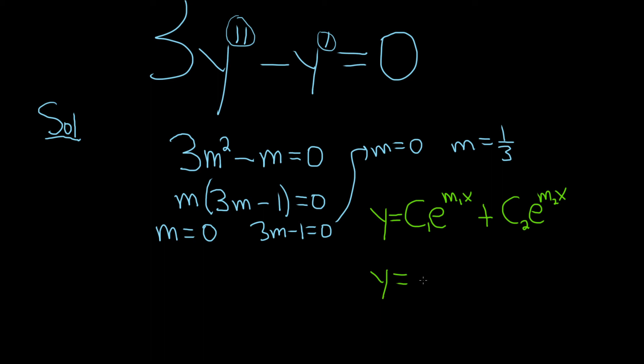So y equals c1 e to the 0x plus c2 e to the 1/3 x. And then e to the 0 is 1, so this is just c1 plus c2 e to the 1/3 x.